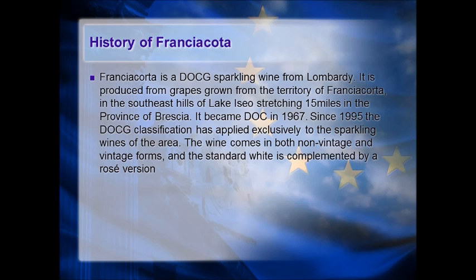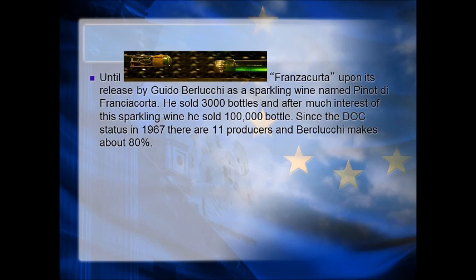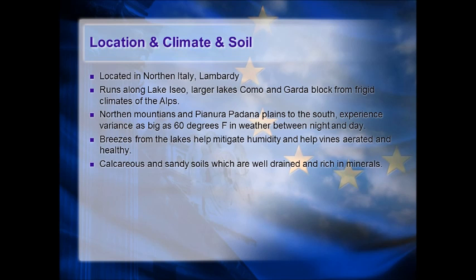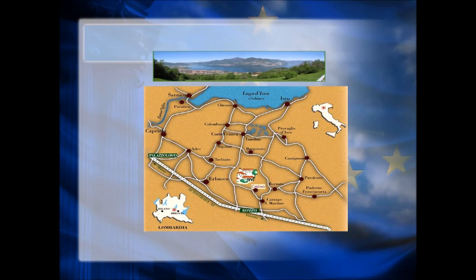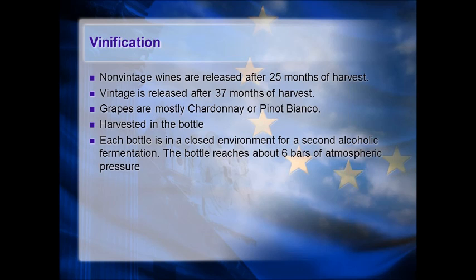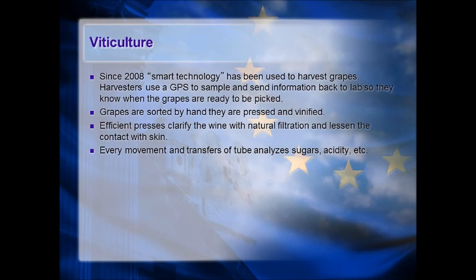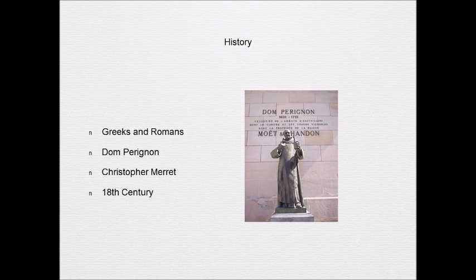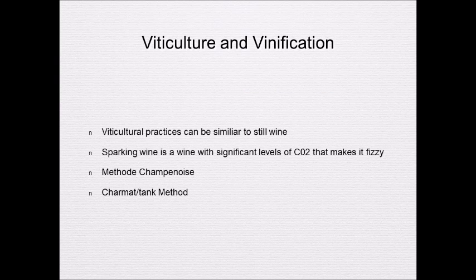Viticulture of Ribera del Duero: often compared to Rioja but different. Large differences between day and night temperatures drive ripening and concentration of grape sugars. Yield is an important factor for high-quality grapes. Vinification: wines produced almost exclusively from red grapes. Tinto Fino, which is Tempranillo, is the star — often blended with Cabernet Sauvignon, Malbec, and Merlot. Albillo is the only white grape, produced and consumed locally. Aging labeling is the same as Rioja.